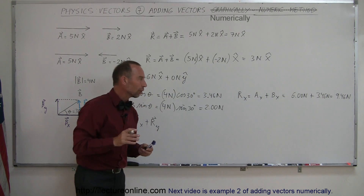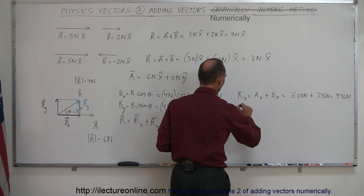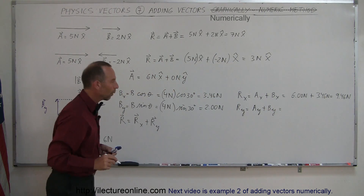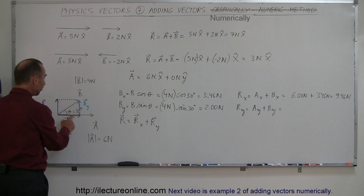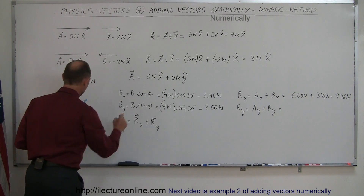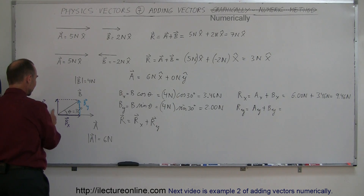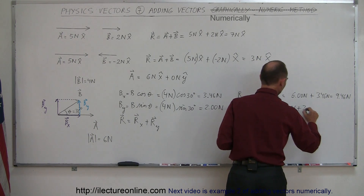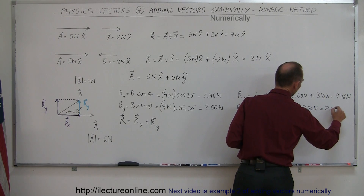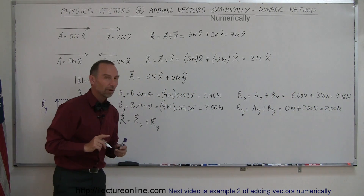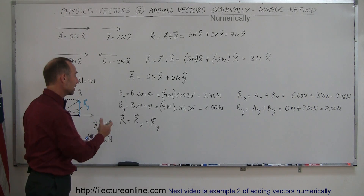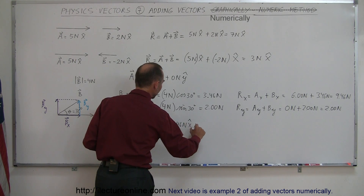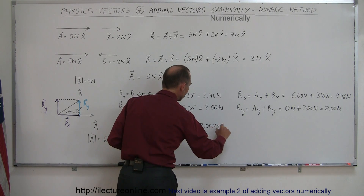The magnitude of the resultant in the x-direction is 9.46 Newtons. We do the same for the y-direction: R sub y equals A sub y plus B sub y. There is no y-component for A — that's equal to 0. The y-component of B is in the positive y-direction, so R sub y equals 0 Newtons plus 2 Newtons, which is 2.00 Newtons. So the resultant is 9.46 Newtons in the x-direction plus 2.00 Newtons in the y-direction.